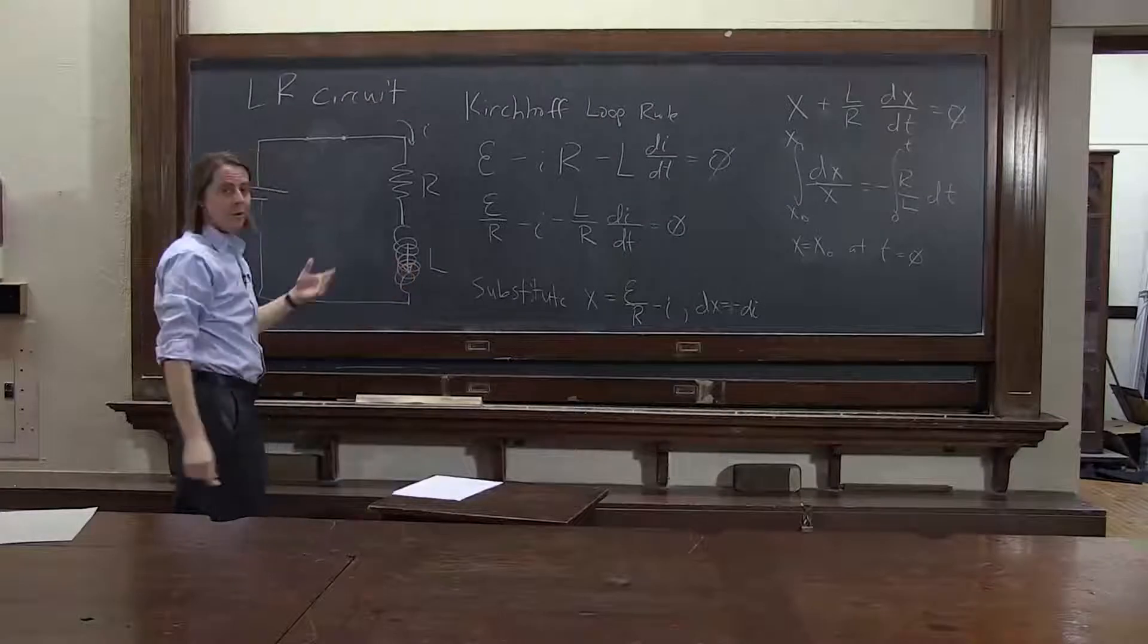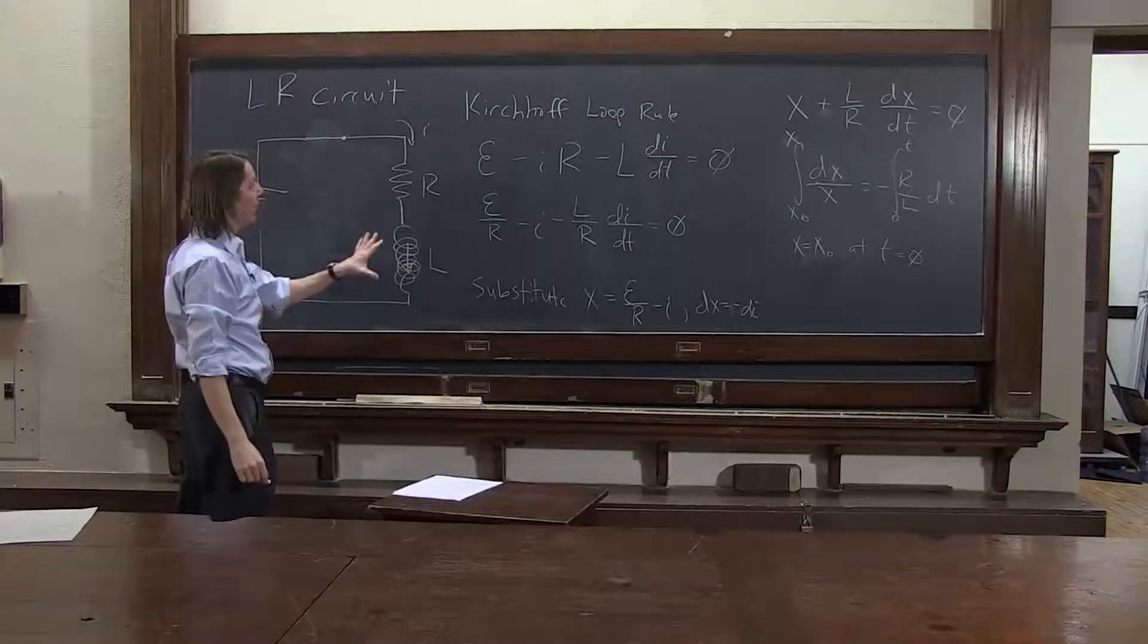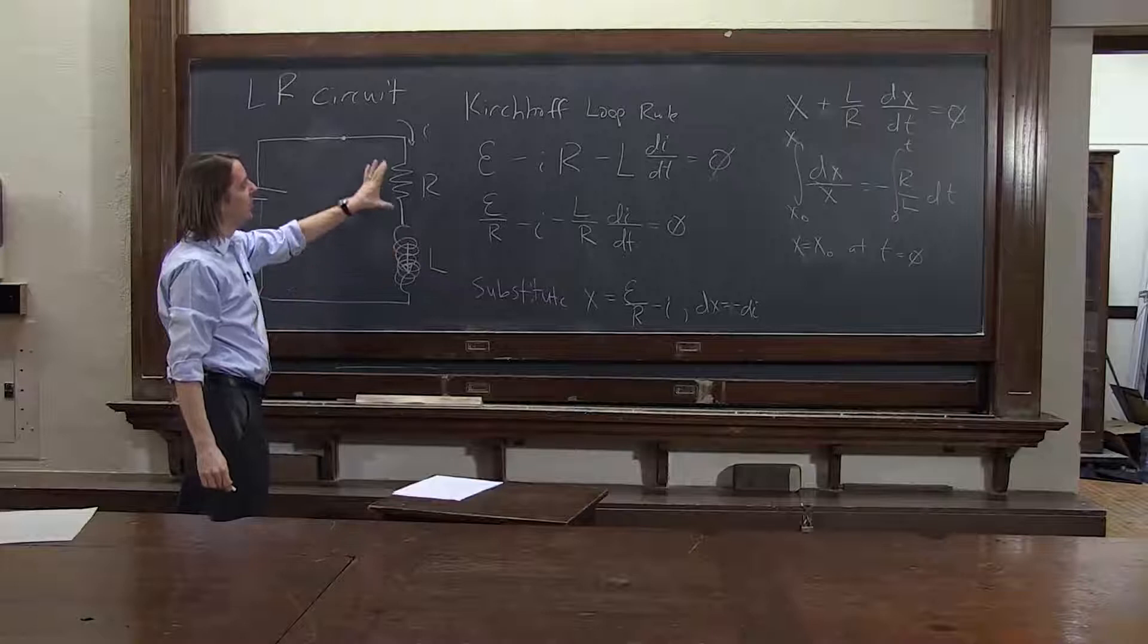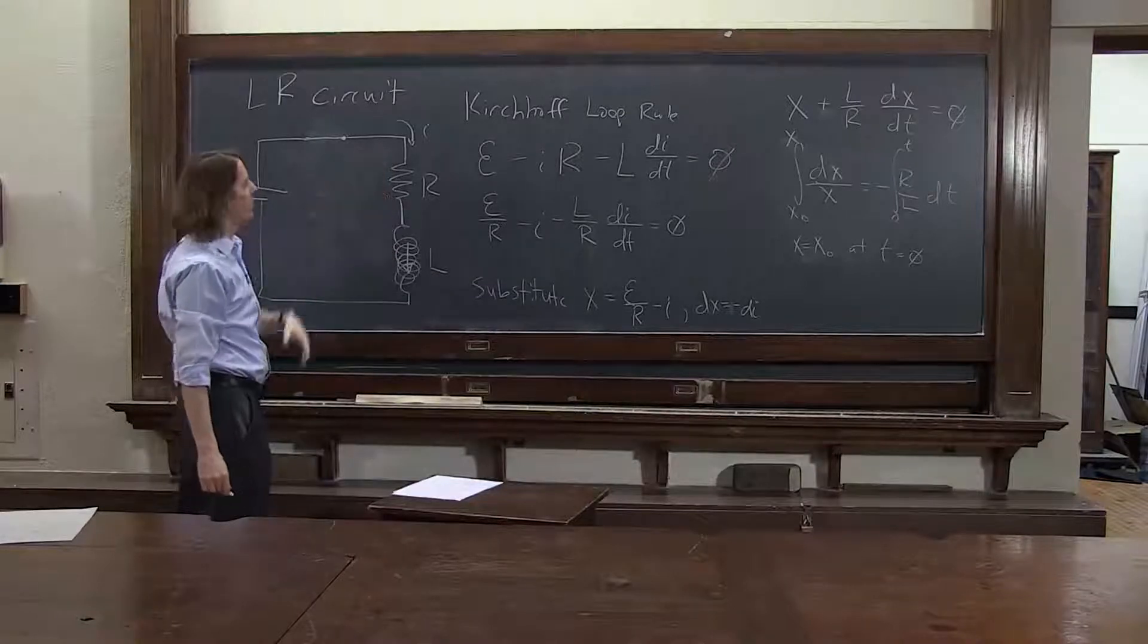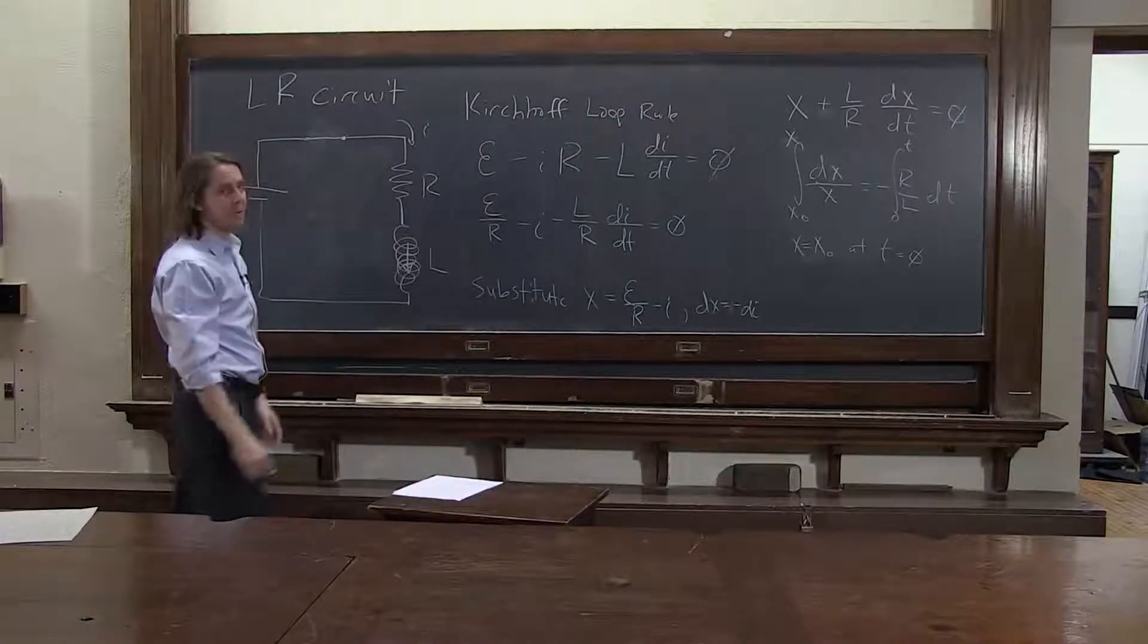We have a nice B field now inside the inductor, but it's constant. There's no back EMF. All the potential drop is across the resistor, and everyone is happy.